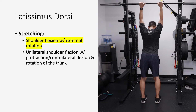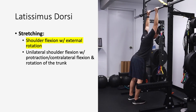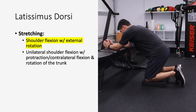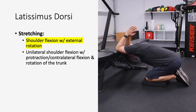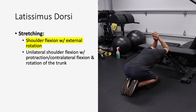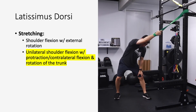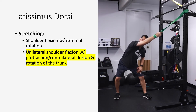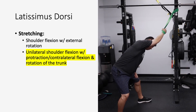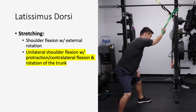To stretch your latissimus dorsi, you either need to do extreme shoulder flexion, or external rotation of the humerus also helps. One favorite stretch is being in shoulder flexion with your elbows bent and externally rotating your shoulders. You can also stretch the lats unilaterally by grabbing onto something and going into protraction and shoulder flexion, such as holding onto the side of a squat rack or a band.